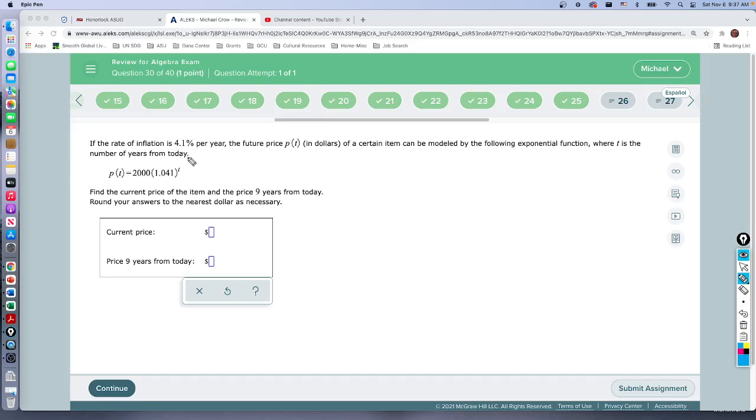First of all, I look at this thing. I've got a function right here so that's probably all I need to use. But let's read this: if the rate of inflation is 4.01% per year, the future value P(t) in dollars, so the future price, so this is the price of a certain item, can be modeled by the following exponential function where T is the number of years from today. So T is in years.